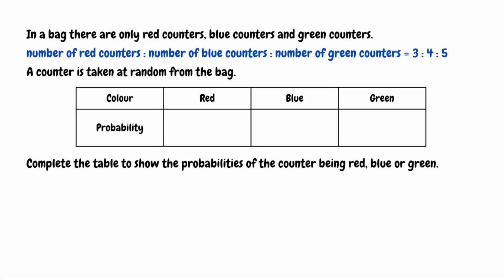In this video we're going to take a look at how we go about finding probability from ratios. For this first question, we have that in a bag there are only red counters, blue counters and green counters. The ratio of the number of red counters to the number of blue counters to the number of green counters is 3 to 4 to 5. A counter is taken at random from the bag. We need to complete the table to show the probabilities of the counter being red, blue or green.